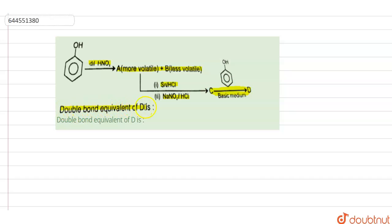It is asking what would be the double bond equivalent of D. So we have to determine the structure of D and after that what would be the double bond equivalent of D. Hence, let us start.